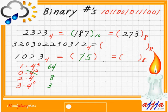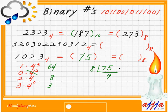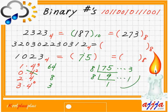Now I'm going to change 75 to base number 8. 75 divided by 8 is 9 remainder 3. Then 9 divided by 8 is 1 remainder 1. Reading remainders backward: 1, 1, 3. That's the answer in base 8.